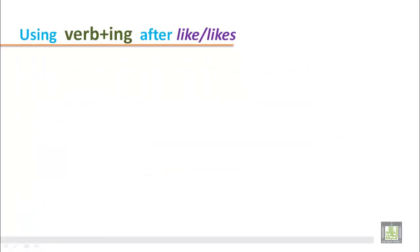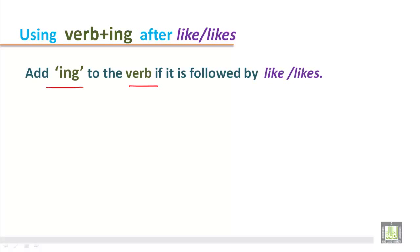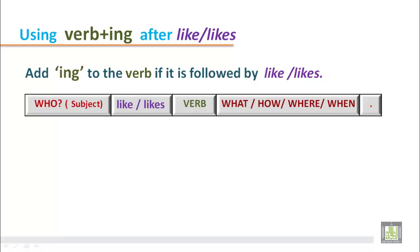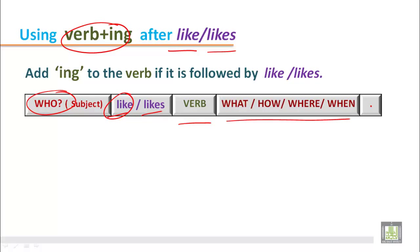Using verb plus ing after like or likes. Add ing to the verb if it is followed by like or likes. This structure shows how to write a sentence using verb plus ing with like or likes. Put like or likes according to the subject — likes for third person singular, like for all other subjects. Then put the verb with ing, followed by additional information such as what, where, or what time.